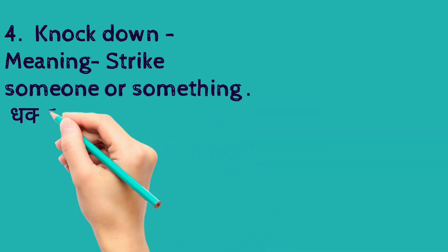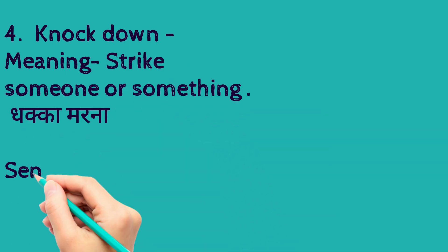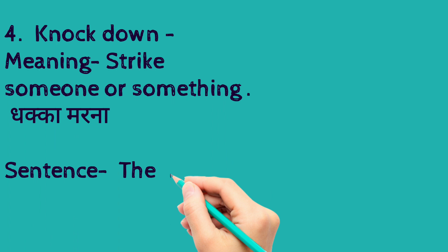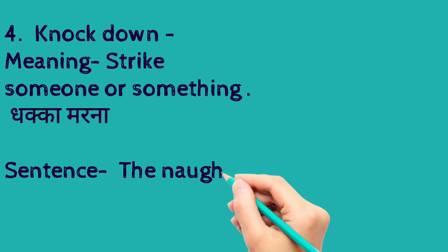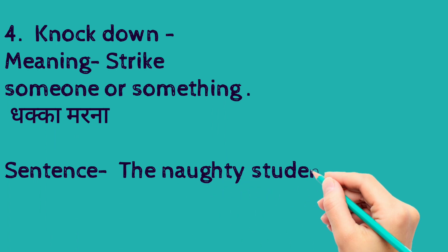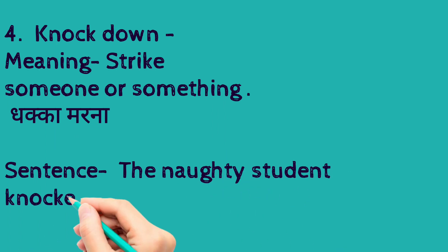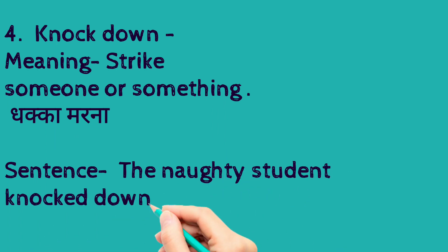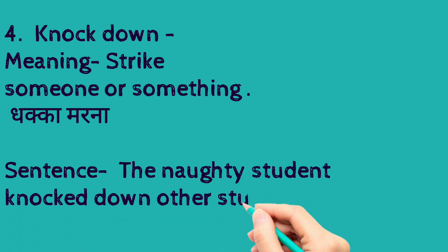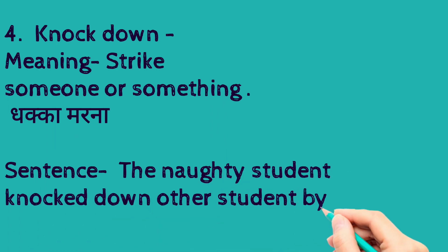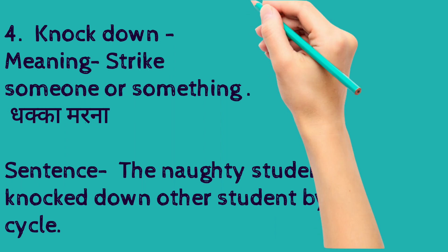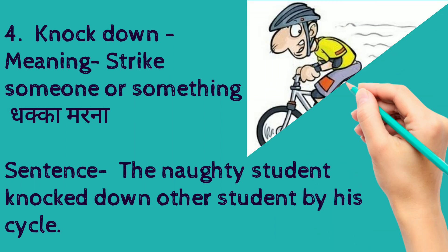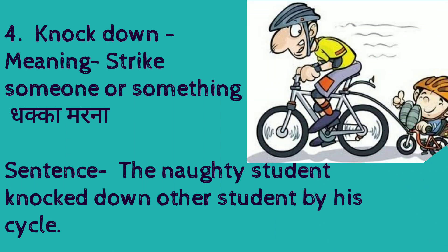The fourth one is 'knock down'. Its meaning is to strike someone or something. The sentence is: the naughty student knocked down another student with his cycle. So the meaning is to strike or push someone.